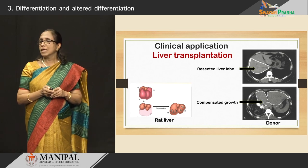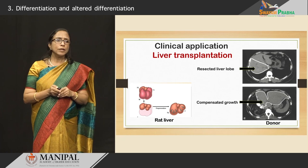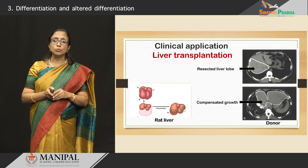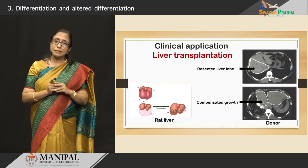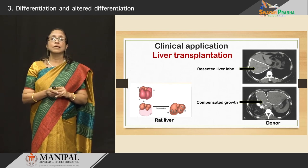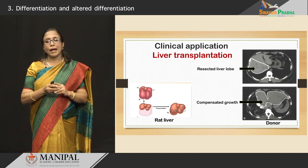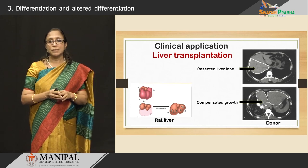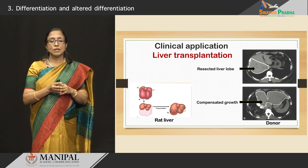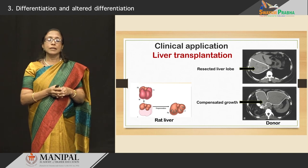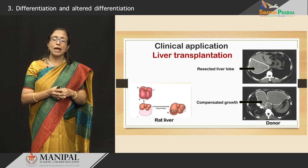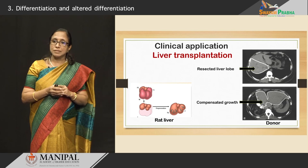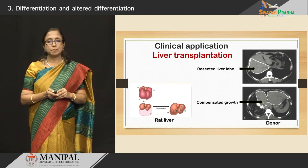A typical example of stable cells and their clinical application is liver transplant. A lobe of the liver is removed from the donor and placed onto a recipient. At the site where the liver lobe has been removed, there is compensatory growth of the remaining hepatocytes so they grow back and the liver returns to normal size. This is very well evident also in experimental animals like the rat liver, where after a lobe is removed, the liver cells regenerate to almost the same size as before.